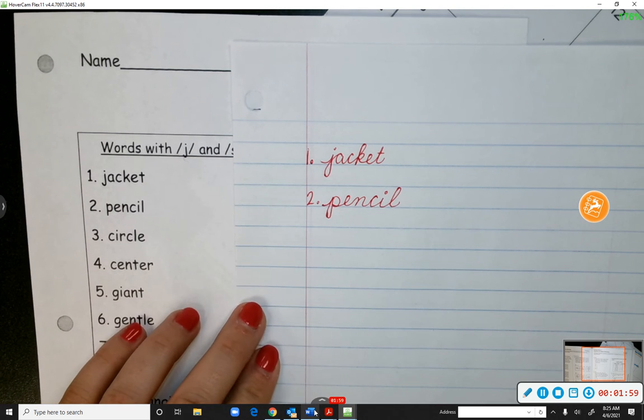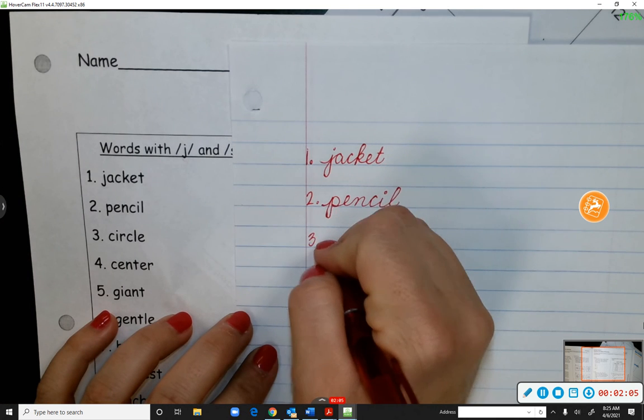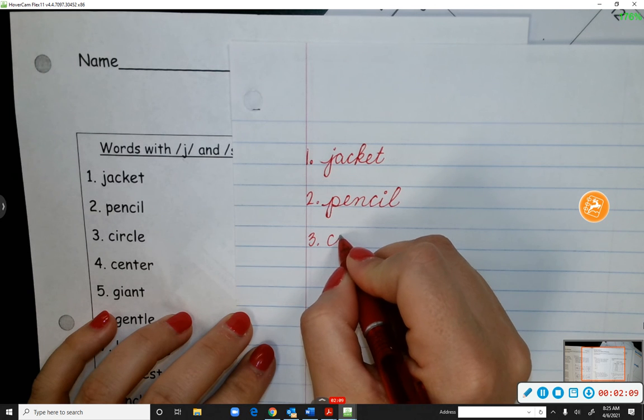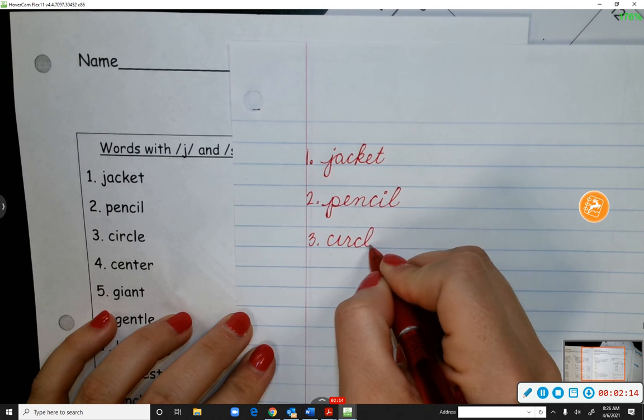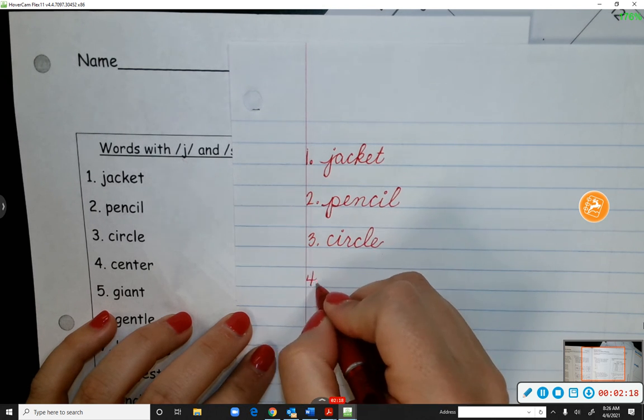Okay, number three is circle. So we hear that S sound at the beginning, right? Circle. So C, I, R, C, L, E. Okay?